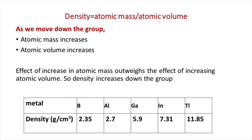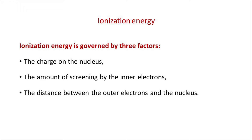The next general property is density. As we move down the group, atomic mass increases and atomic volume also increases. However, the effect of increasing atomic mass outweighs the effect of increasing atomic volume, so density increases down the group.